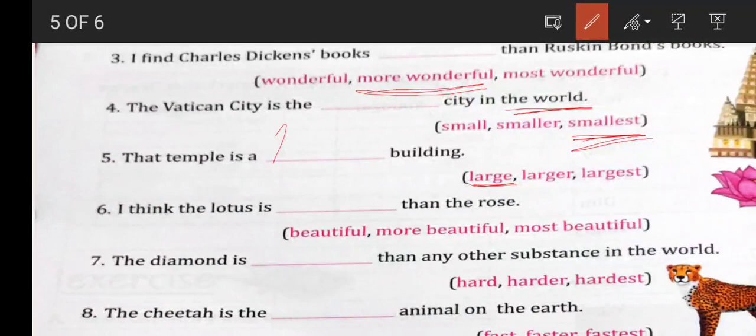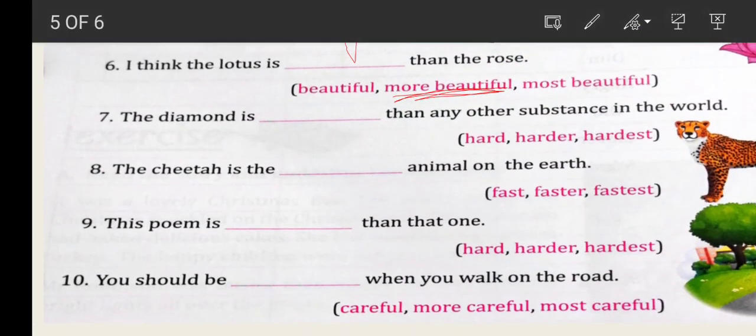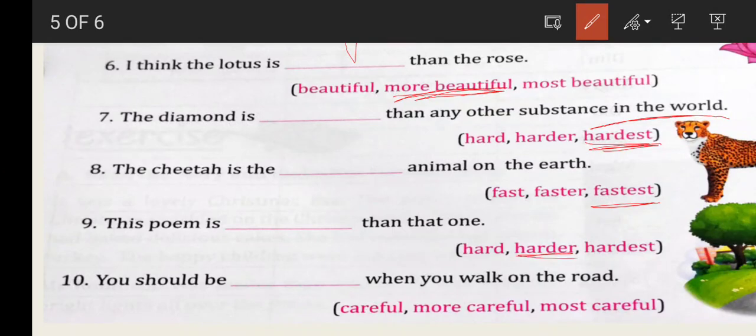I think the lotus is more beautiful than the rose. The diamond is harder than any other substance in the world. Hardest, comparing with the world, so superlative. The cheetah is the fastest animal on the earth. This poem is harder than that one. You should be careful when you walk on the road.